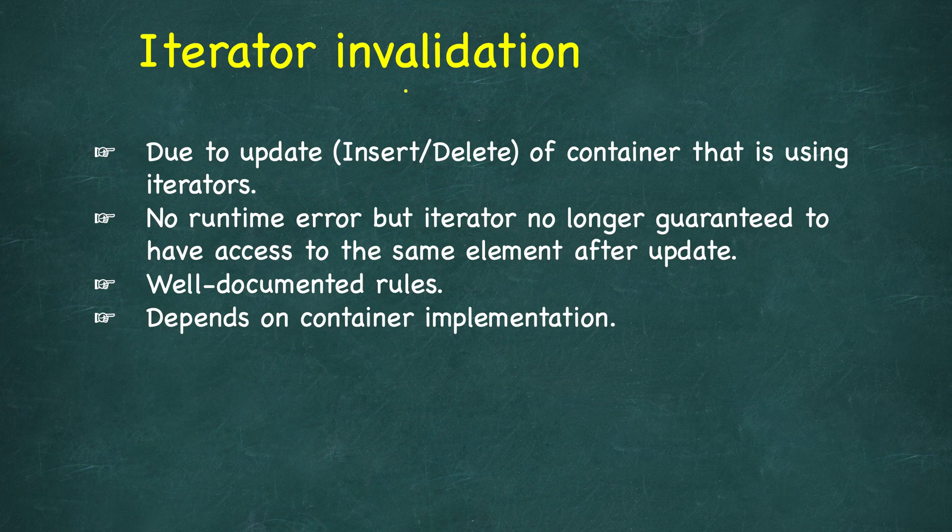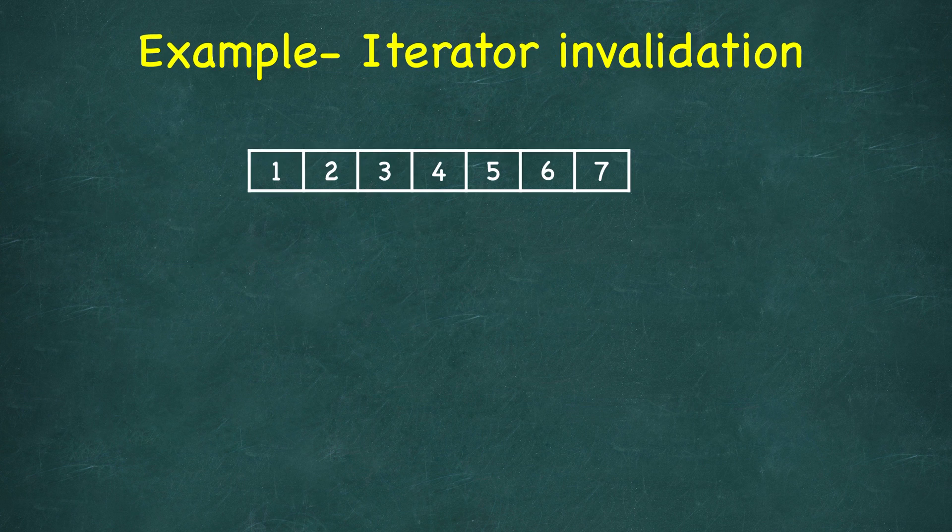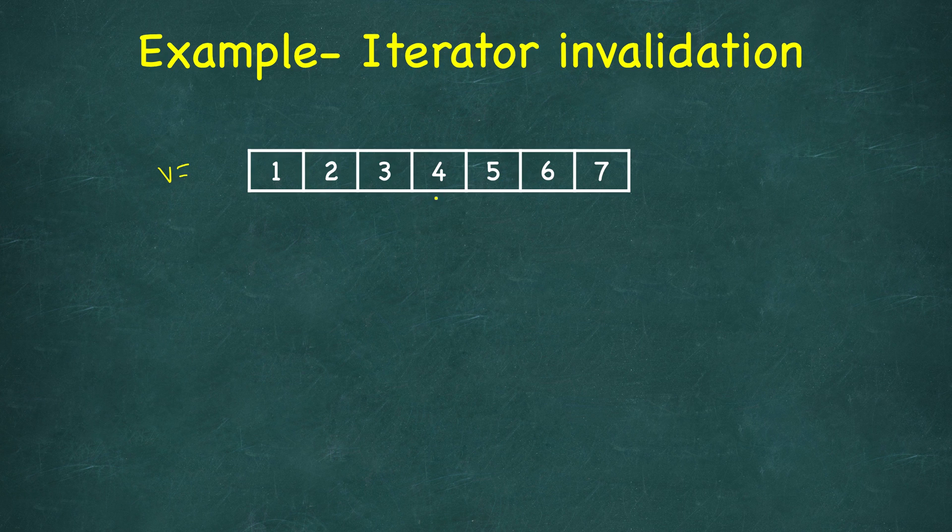There are some well-documented rules for different iterator invalidation, and we will look at that. So first, let's look at an example. Let's say we have this vector, and we have an iterator which is pointing at the fourth element. Then we call insert on this and we insert 100 before 4.